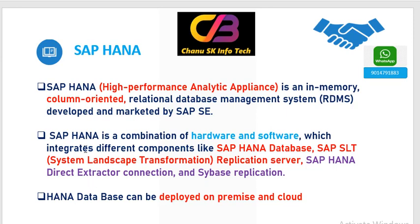SAP HANA is a combination of two components: one is hardware and the second one is software — both are included in SAP HANA. HANA is a database integrated with other components like SAP SLT — SLT stands for System Landscape Transformation and Replication Server — SAP HANA Direct Extractor Connection, and CBS-based replication. These are already linked with the SAP HANA database.